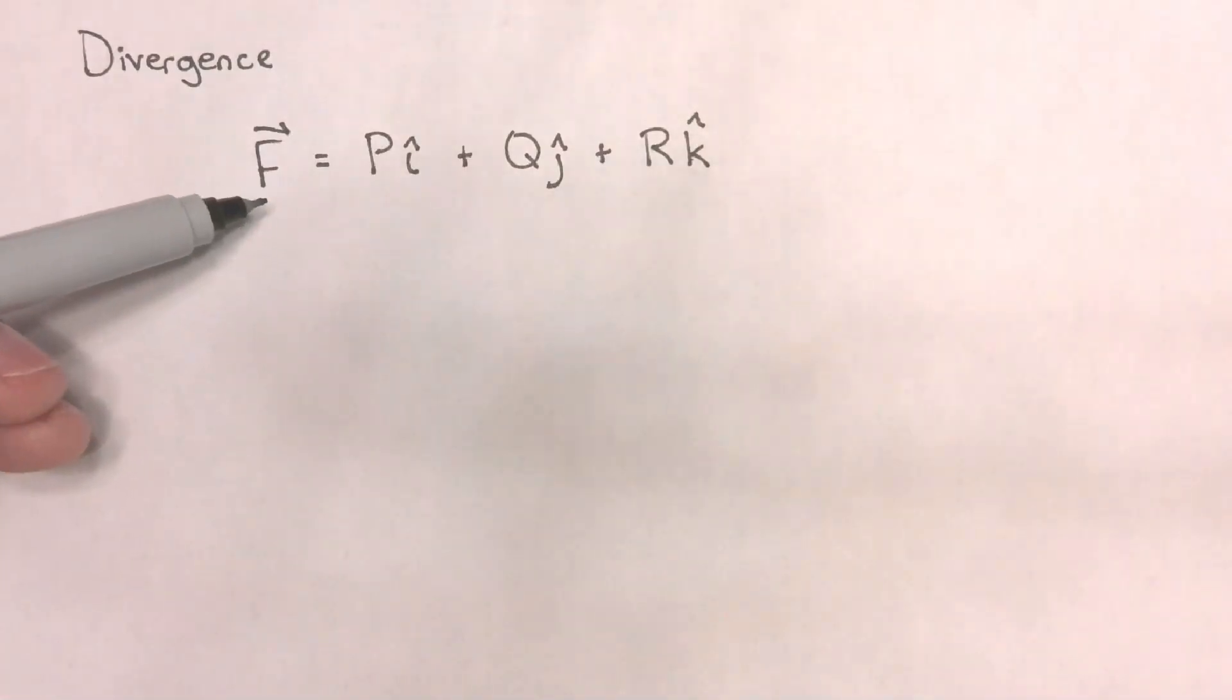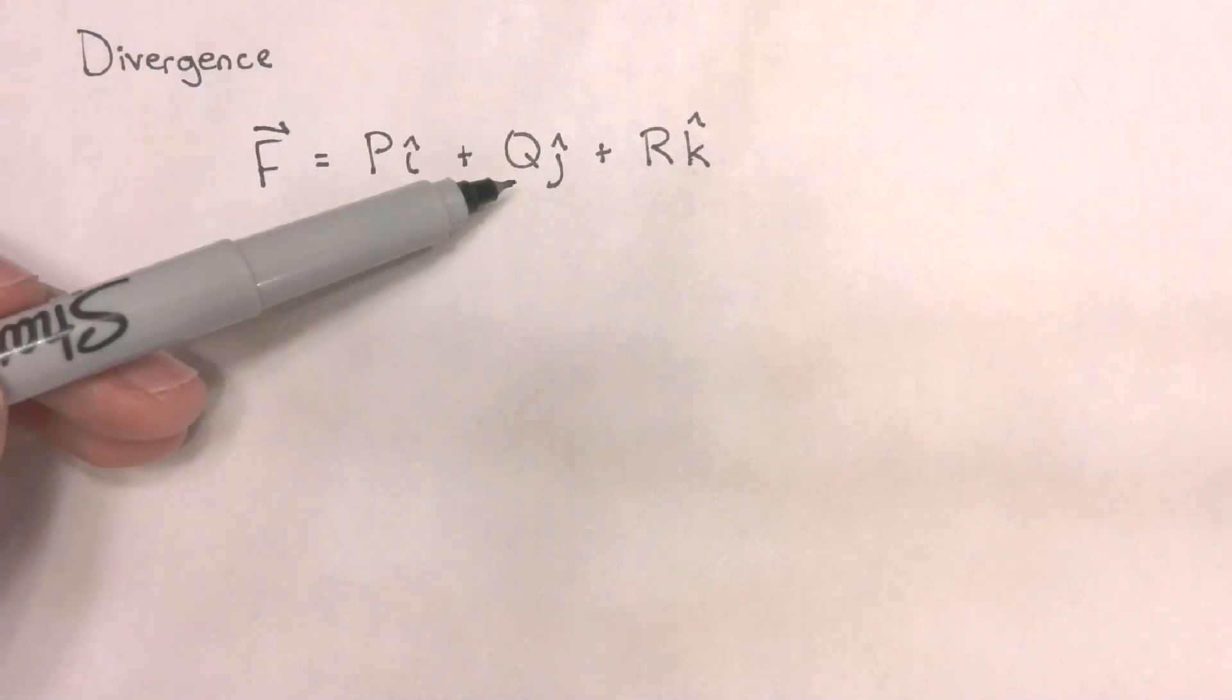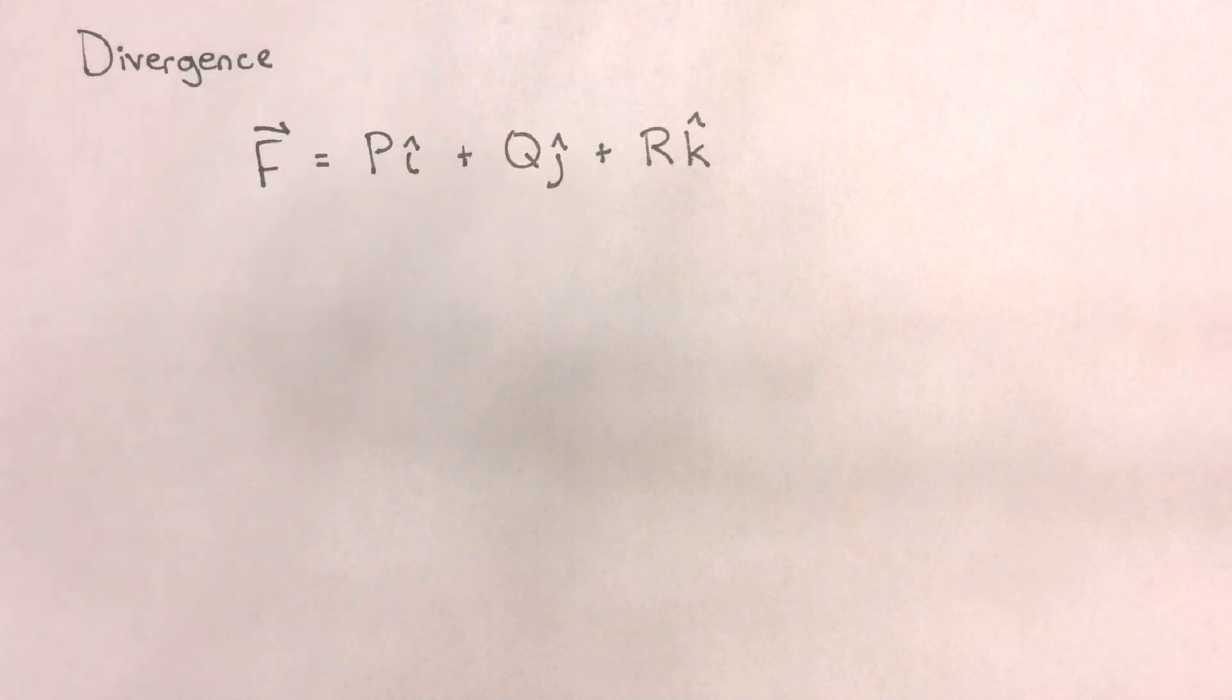If f were a velocity vector, then the x component would be u, q would be little v, and r would be w.